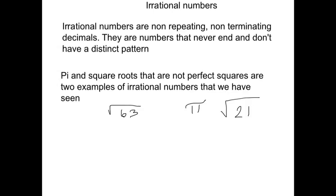Whereas if you were to type the square root of 63 on your calculator or pi on your calculator, those decimals end only because the calculator has a distinct number of places. Those decimals will never, ever end. So pi and square roots that aren't perfect squares, like the square root of 63, 21, and 45, those are irrational numbers.